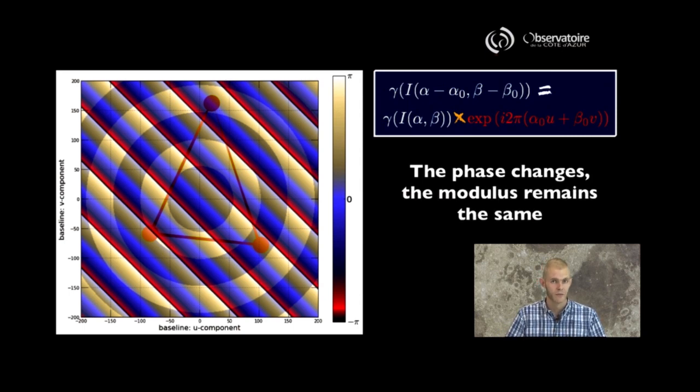We see that the phase, of course, seems to be modulated by this, but again, because this is a complex exponential term purely, we don't introduce any change in the modulus of that function, which means that our visibility is not really perturbed.